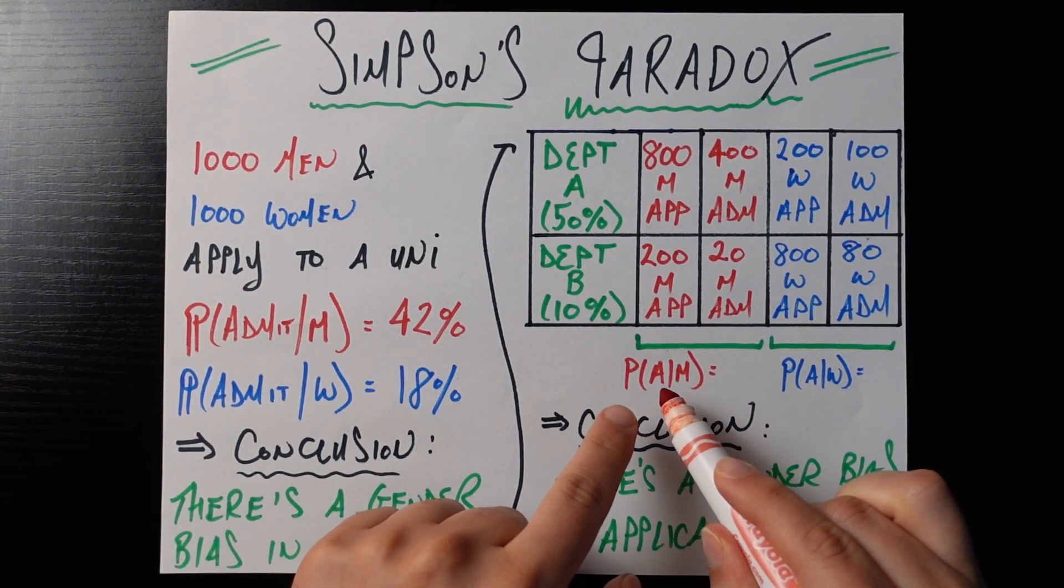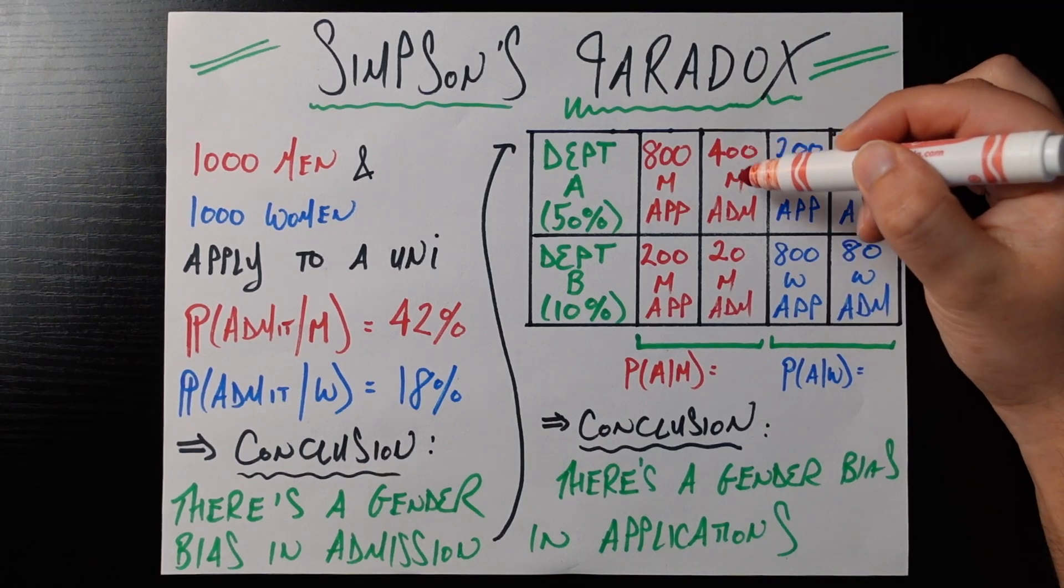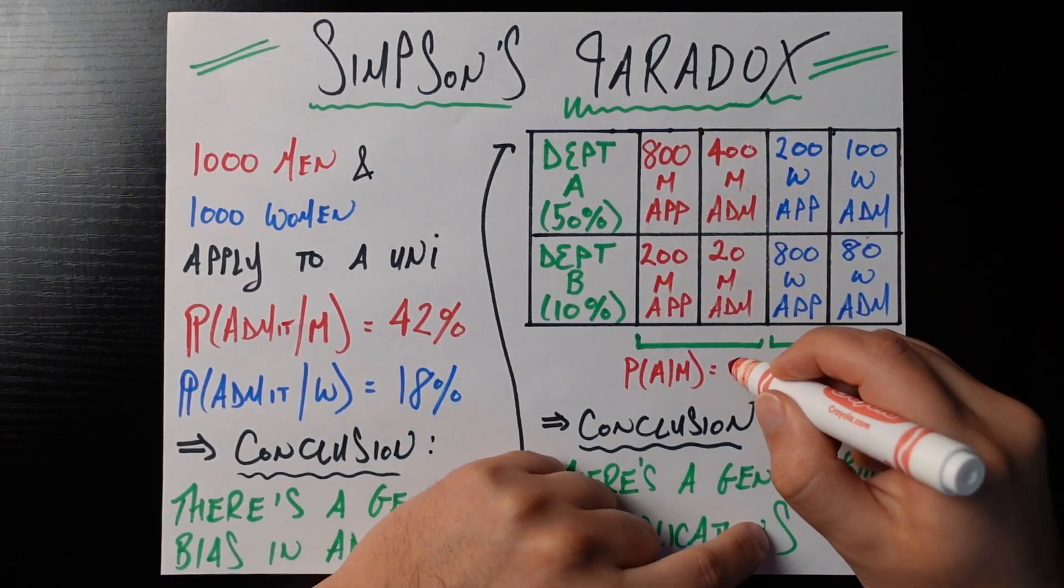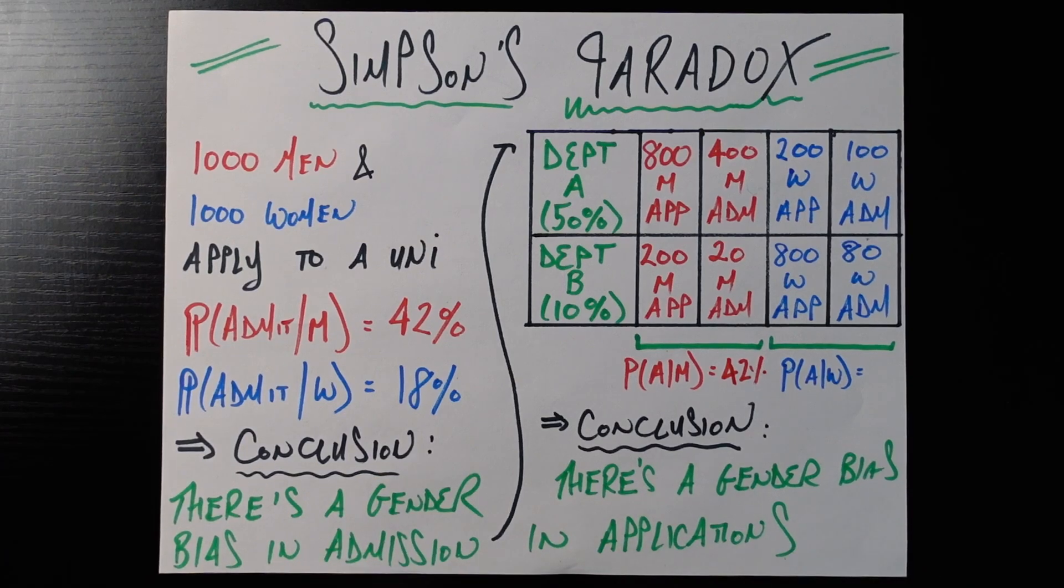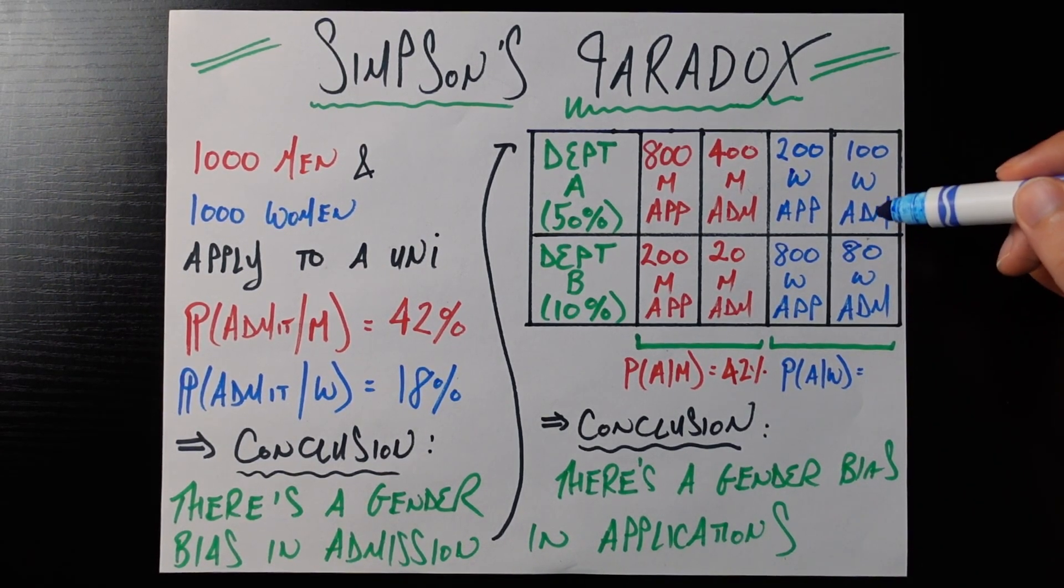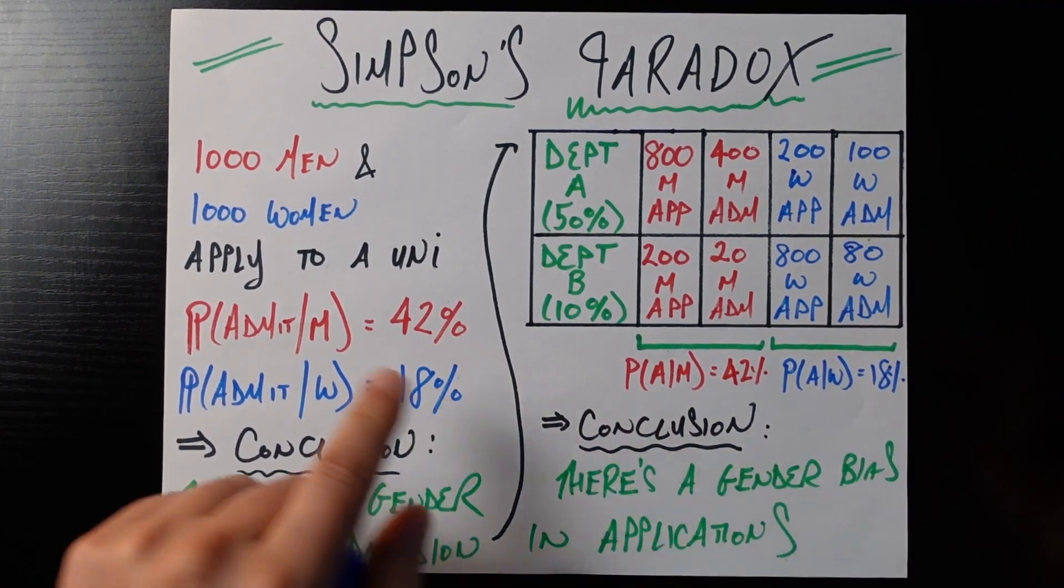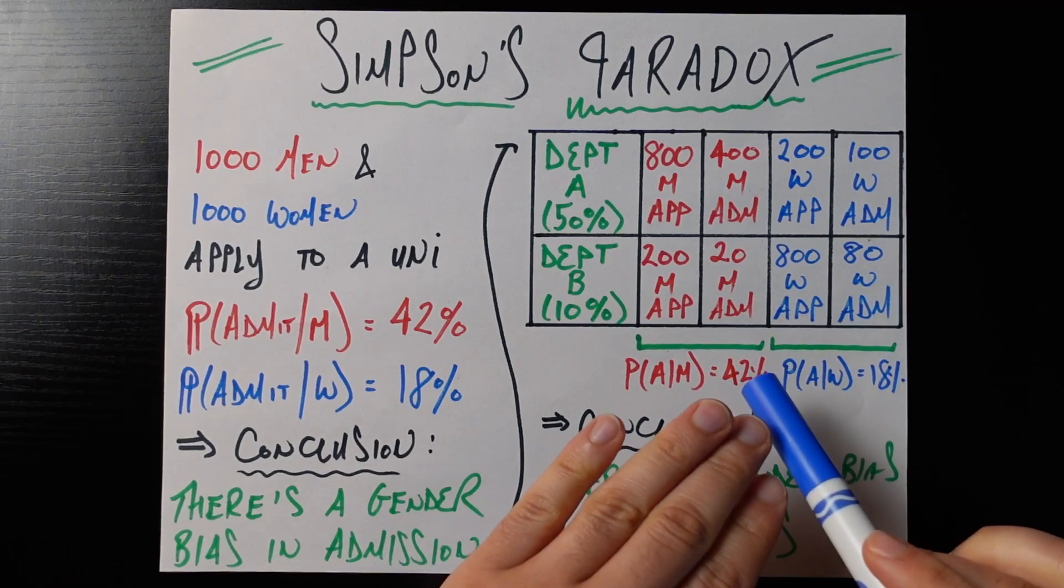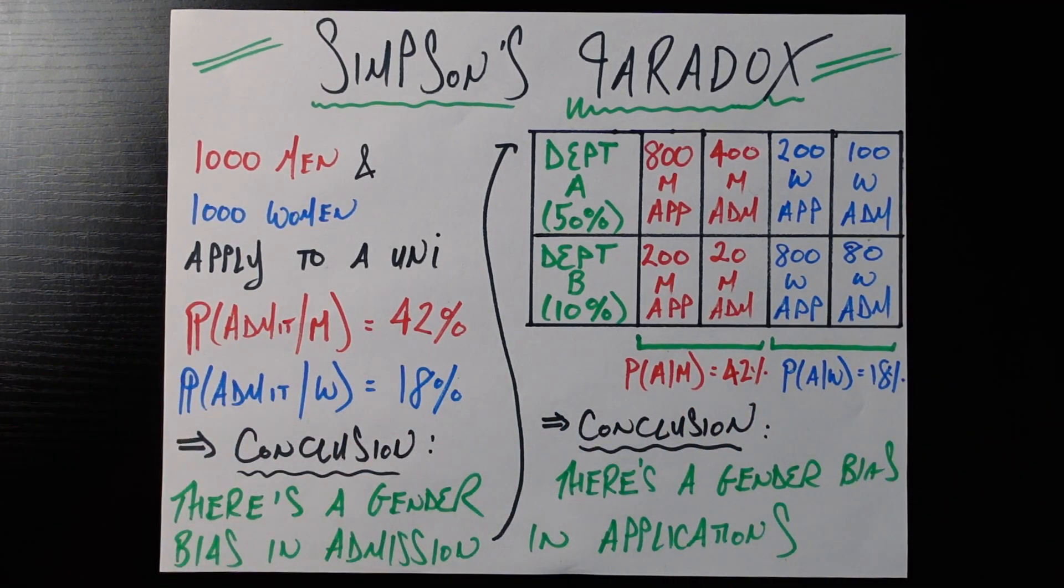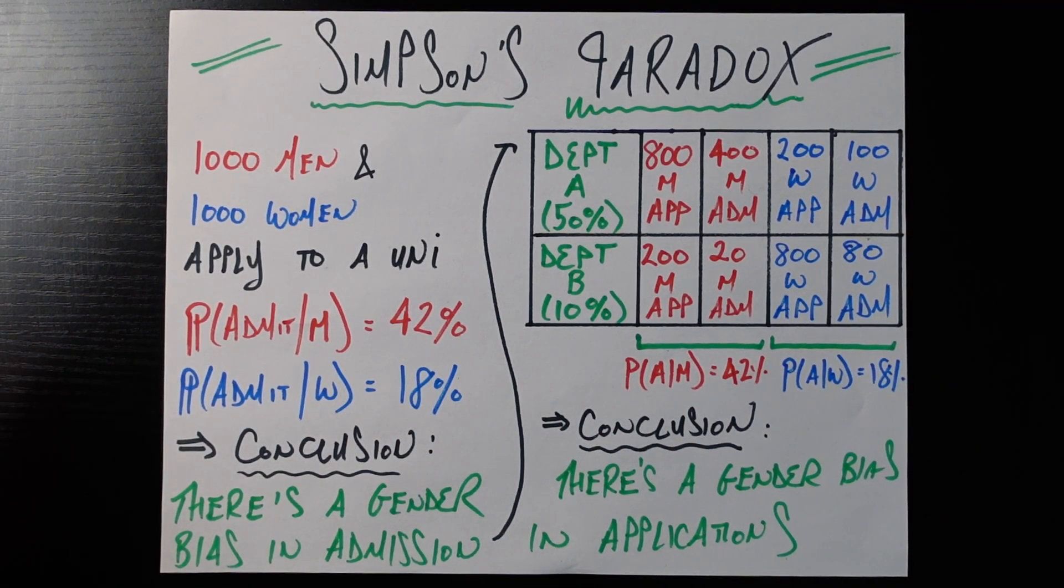So what's the probability you were admitted given you're a male? So that's 420 people divided by 1,000 people or 42%, which is exactly what we got back here. What's the probability you were admitted given you're women? That's 180 people divided by 1,000 people or 18%, the same stat we got back here.